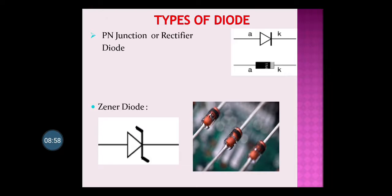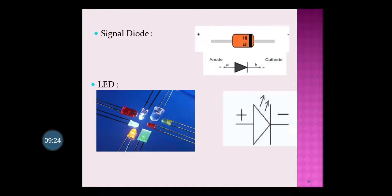The symbol of the diode is shown here. The actual black color diode is what you will find and use in the laboratory. The red color diodes are zener diodes — the zener diode symbol shows a z-type structure on the cathode side instead of a straight line. Signal diodes look like this and their symbol is also shown.